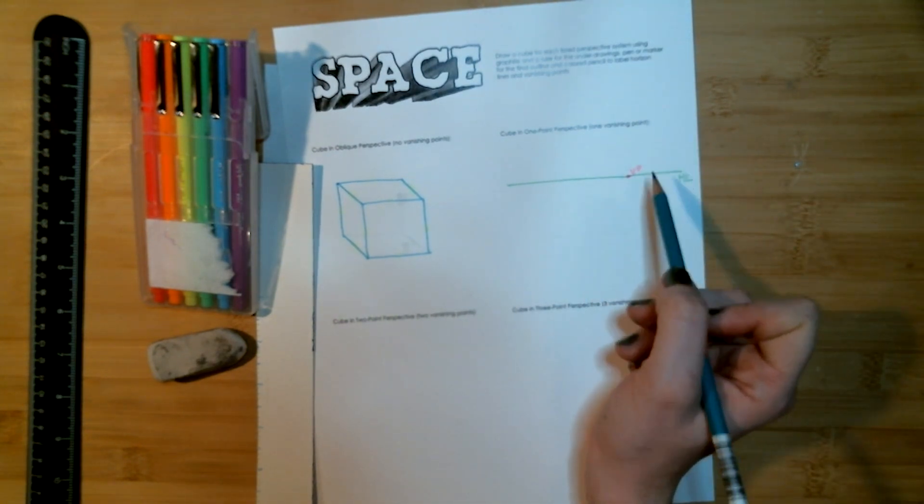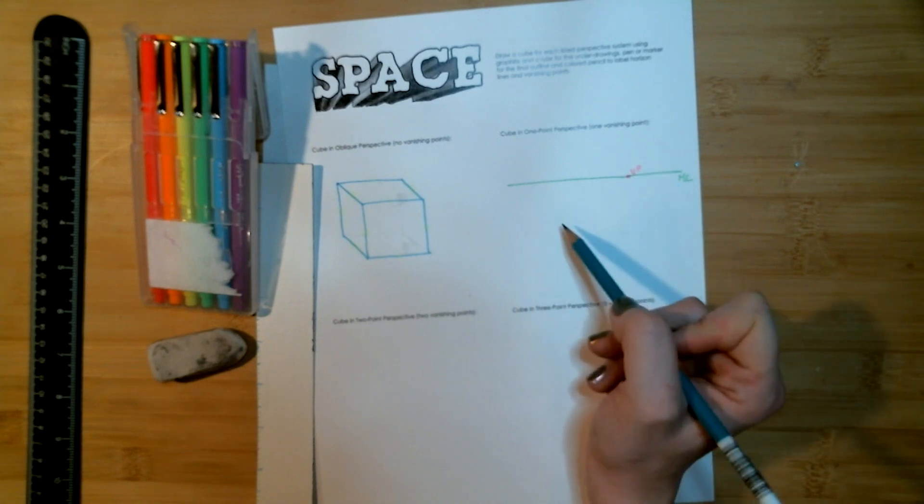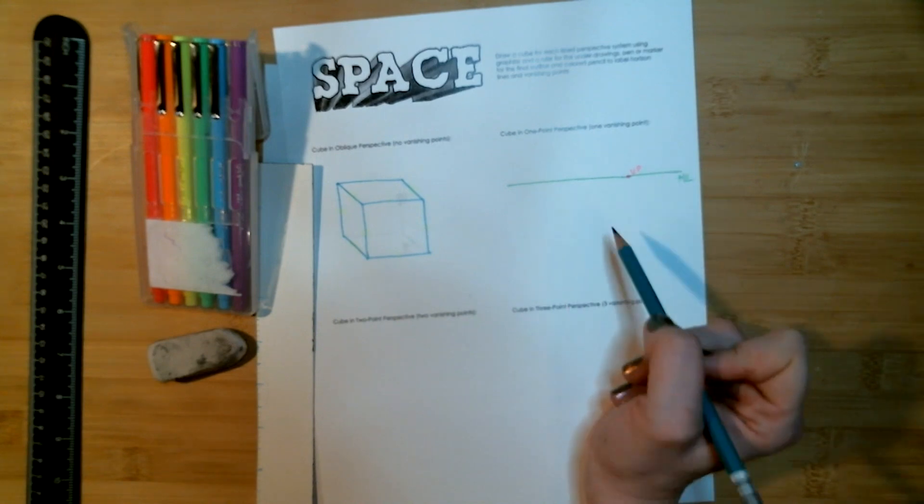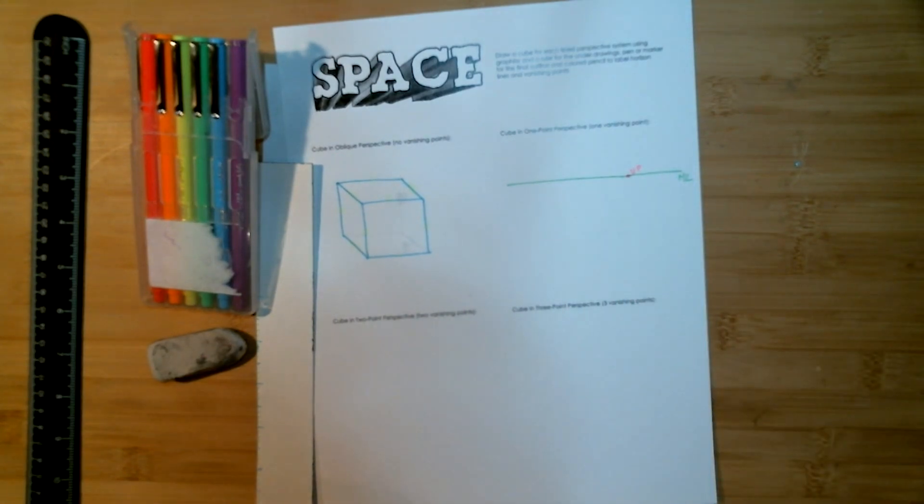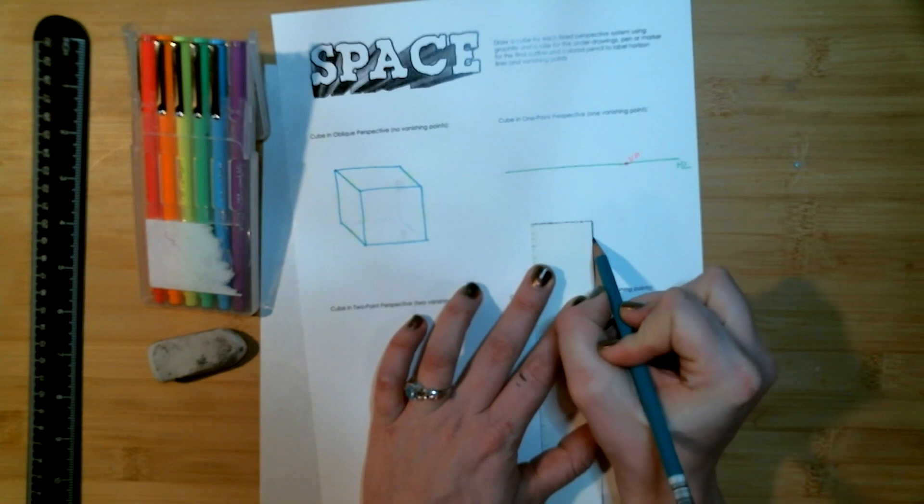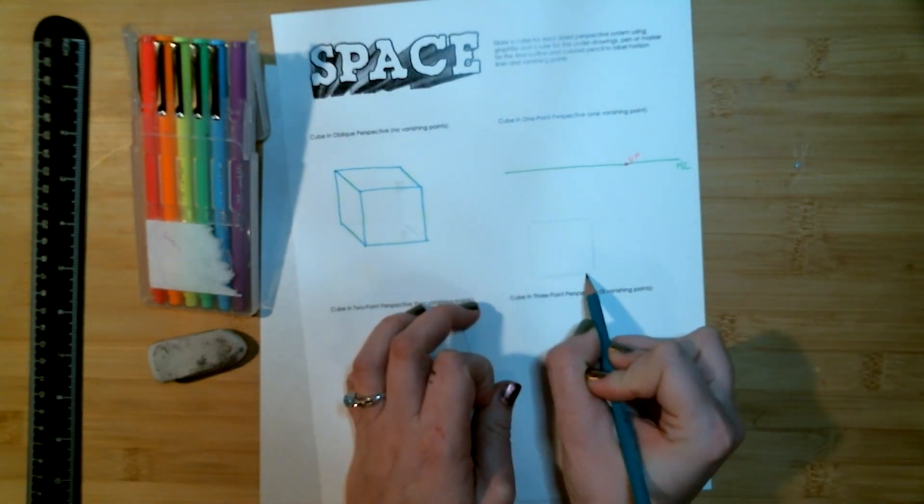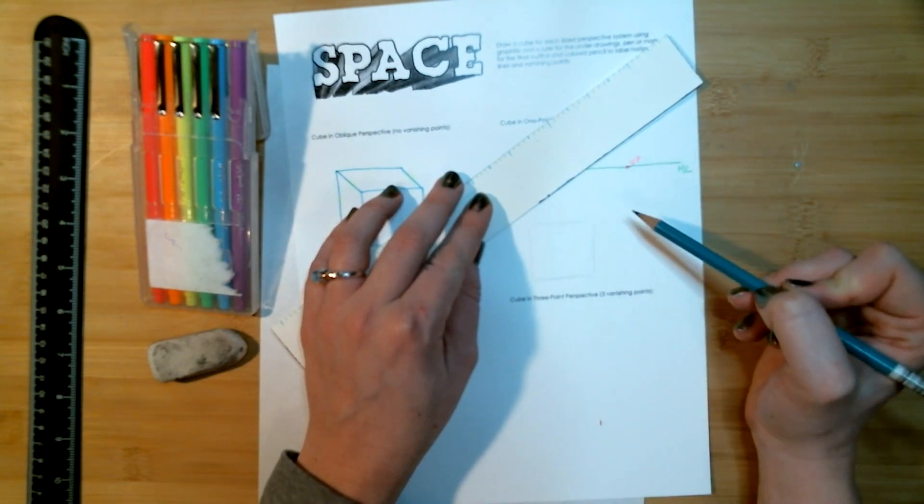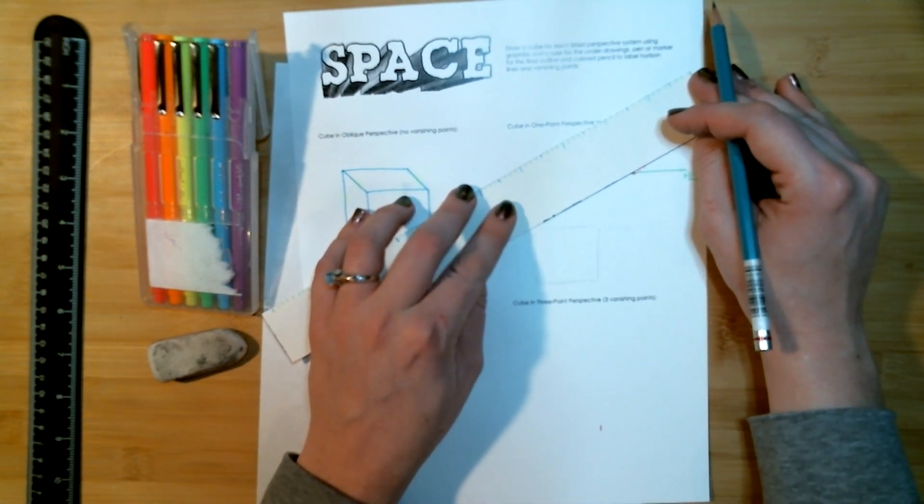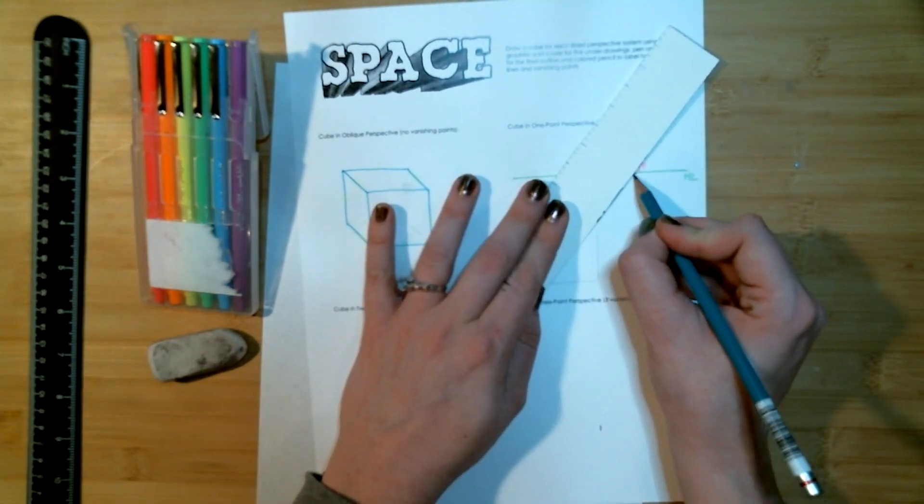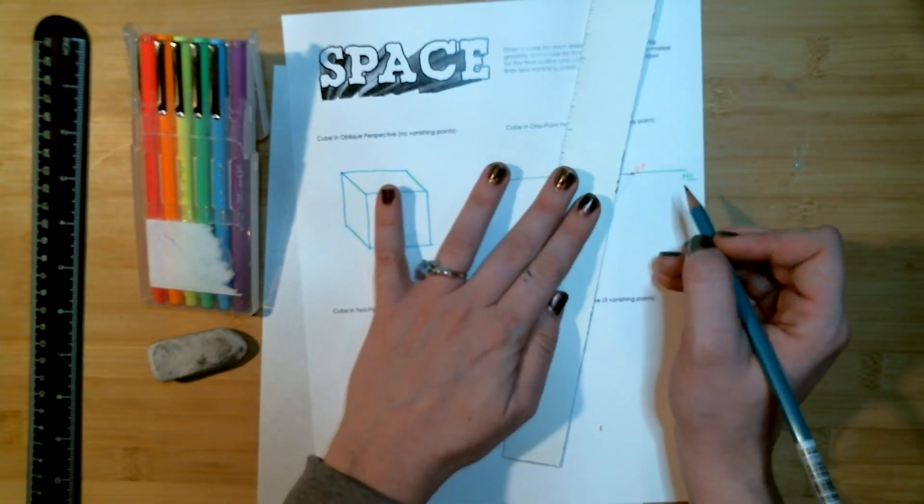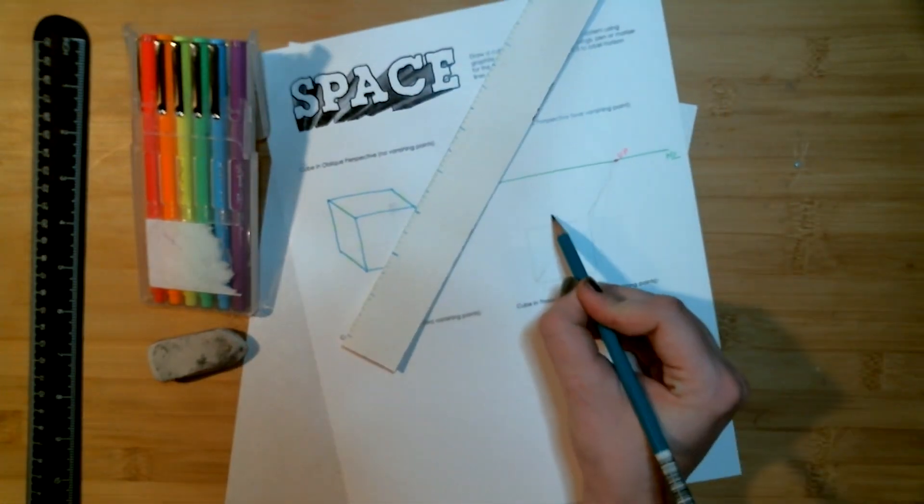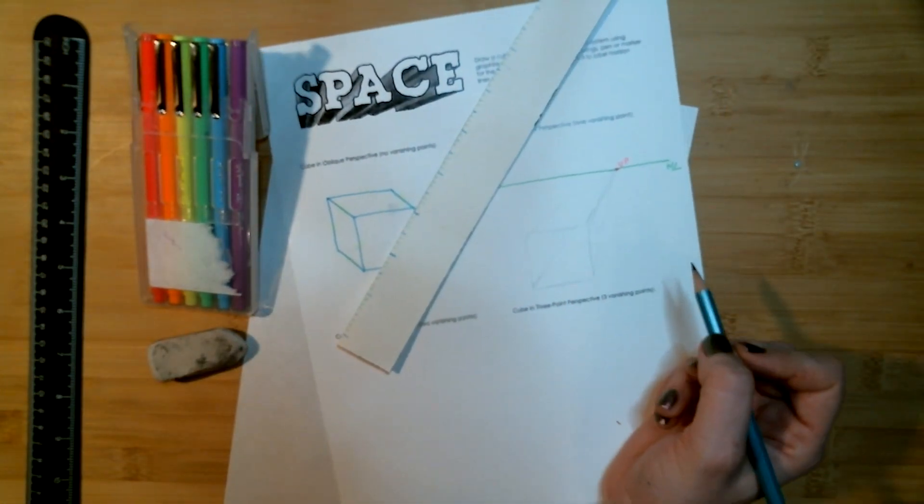And that one will create once we connect the corners of our first square to do the back parts of the cube. Now I'm going to connect all of my corners to my vanishing point. Now I'm going to choose the back of my box.